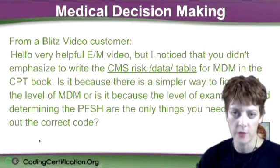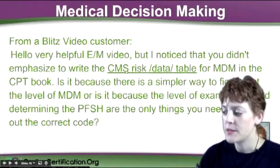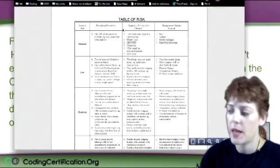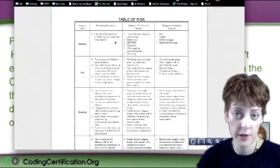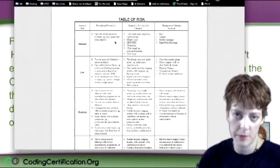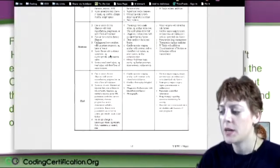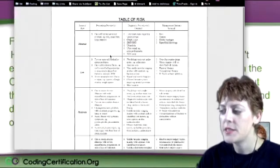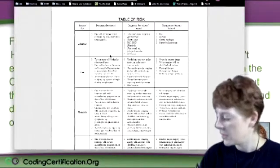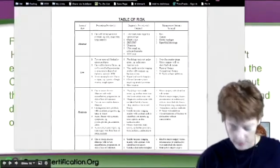So E&M coding has evolved on the board exam. The CMS risk — I put a hyperlink here to show you what that looks like. This is the table of risk. If you want to write that in your manual, go ahead. You can write anything you want in your manual. You cannot print this and tape it — that is not allowed. The reason why I don't recommend it is because there is a table that I believe they will use more on the board exam. So let me show you now that I got my document camera working.